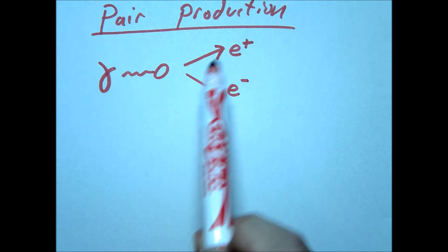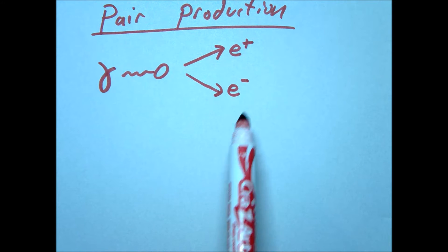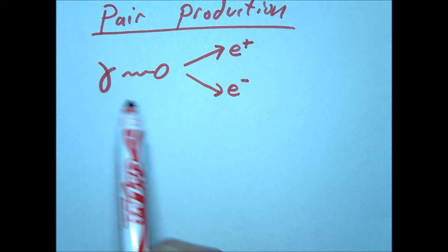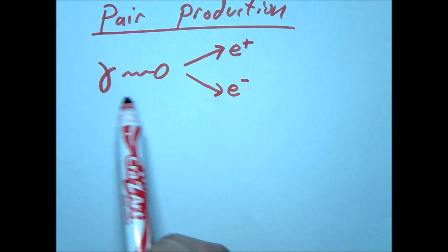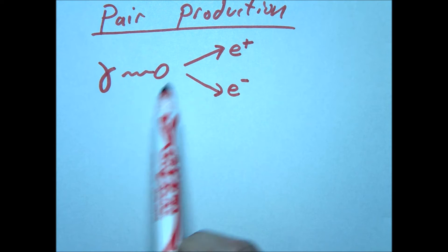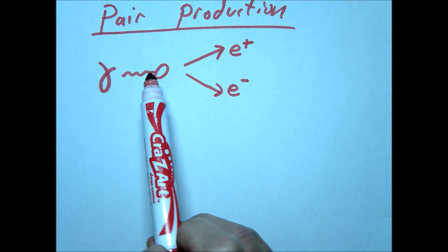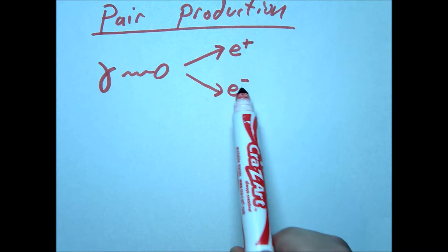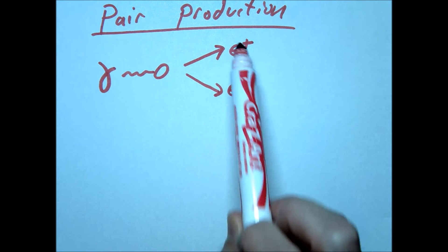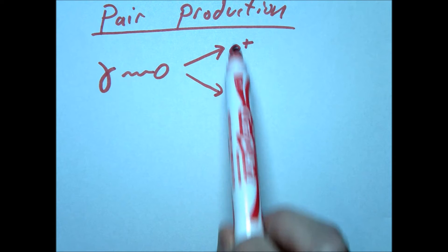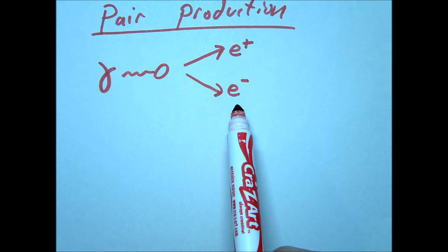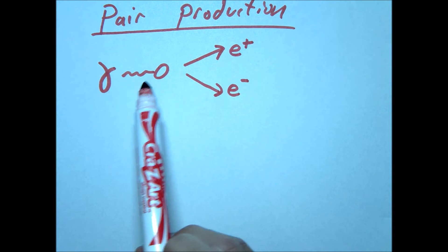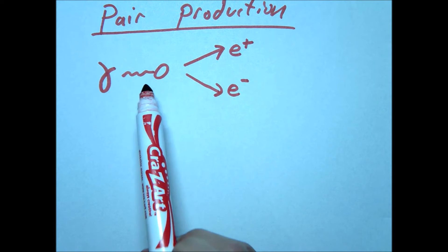We also need momentum to be conserved. So this gamma ray needs to have an energy sufficient to produce the mass of each of these particles, or the energy equivalence of each of these. So let's figure out what the minimum energy of this photon needs to be.